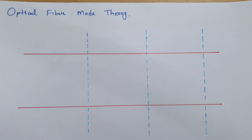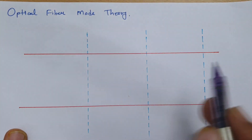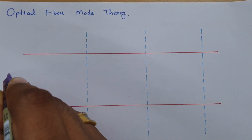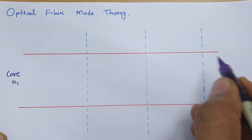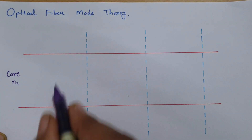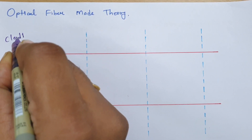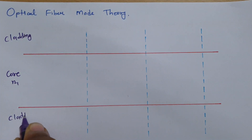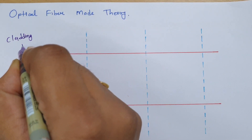Before I explain modes, let us look at the optical fiber structure. This is the optical fiber we have, where this region is the Core, having Refractive Index N1. Above and below the red line is the Cladding, which has Refractive Index N2.